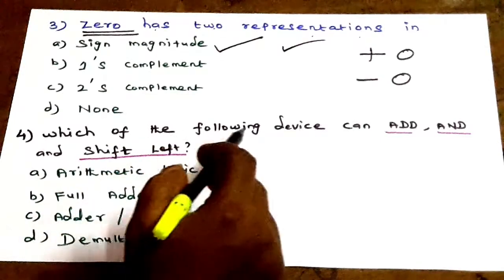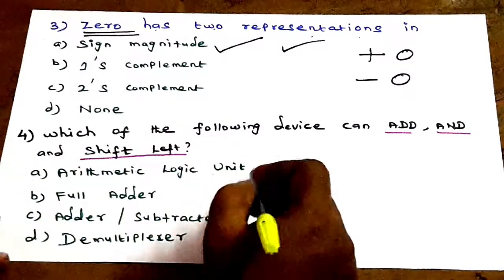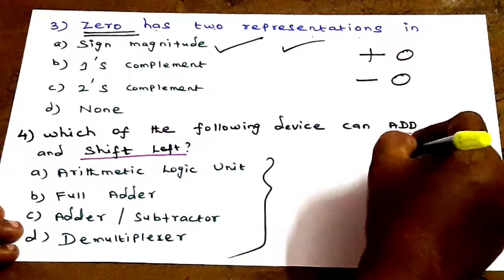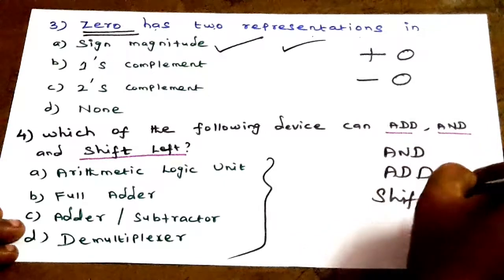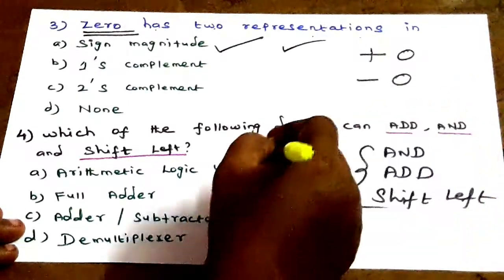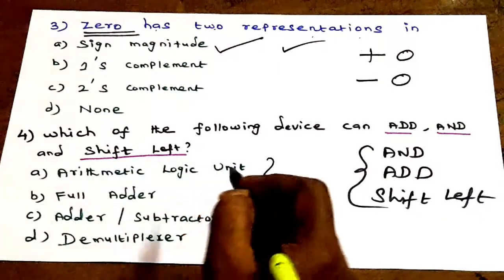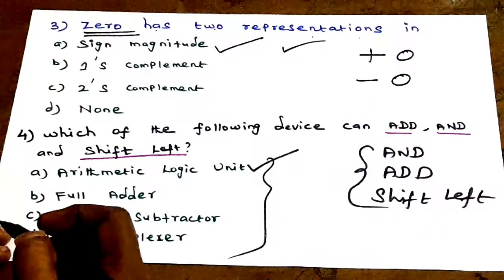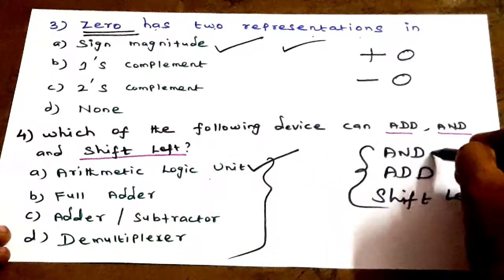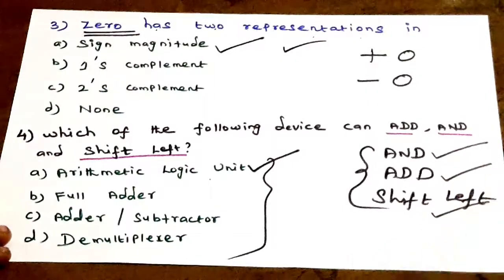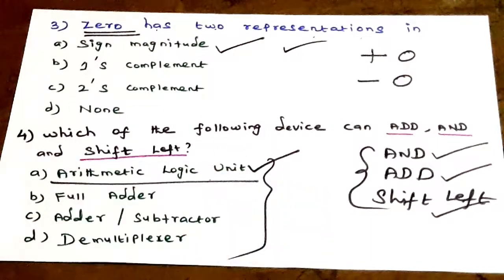Next question: which of the following device can perform ADD, AND, and shift left operations? There are 4 options. These three operations — ADD, AND operation, and shift left operation — can all be performed by the ALU (Arithmetic Logic Unit).